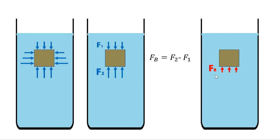Buoyant force can be computed as follows: assuming the forces at the bottom as F2 and the forces on top as F1, buoyant force is equal to F2 minus F1. That is how we compute for buoyant force.